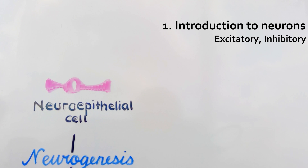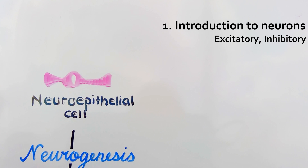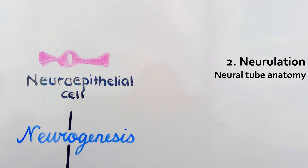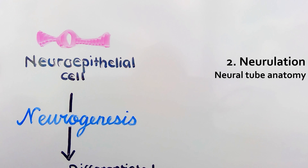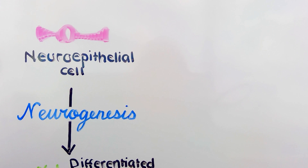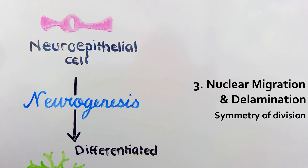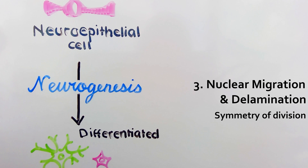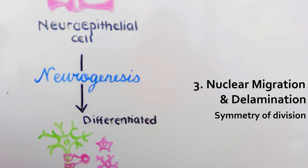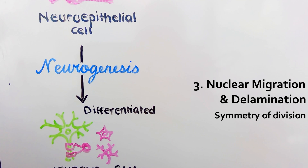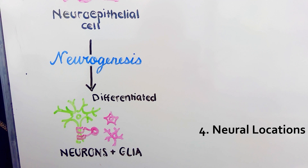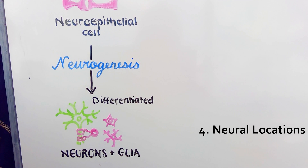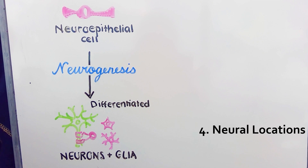Number one, we'll have an introduction to the different types of neurons, so both excitatory and inhibitory. Second, we'll go over a review of neurulation and the neural tube anatomy. Third, we'll discuss nuclear migration and delamination from the ventricular zone, and we'll also delve into symmetric and asymmetric cell division. And finally, fourth, we'll discuss the final locations of each of the neurons that have just been differentiated.